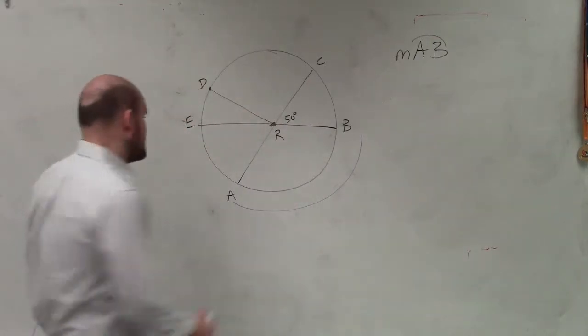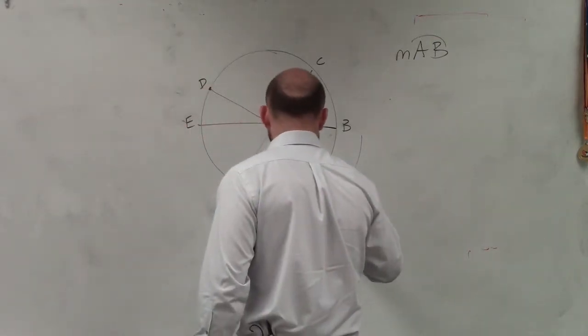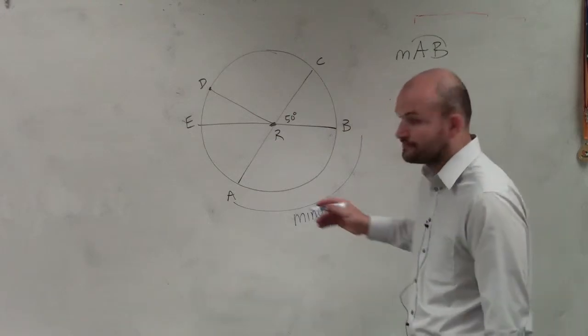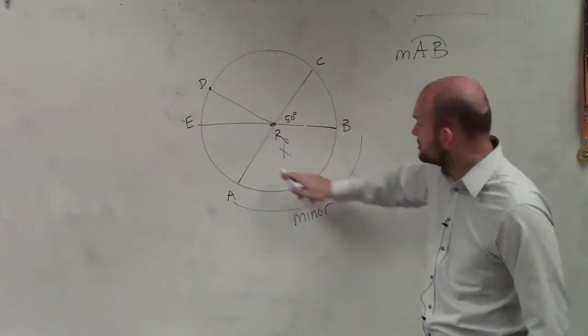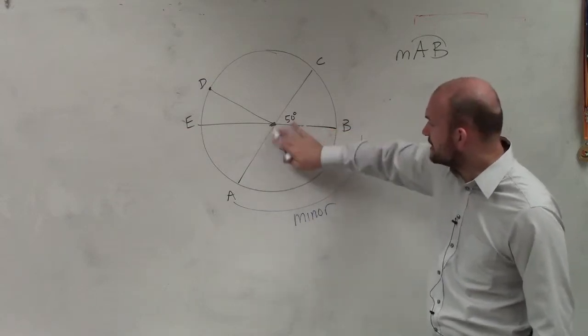We notice that this arc is less than 180 degrees, so we know that it is going to be our minor arc. Now, a minor arc, we don't know the measurement from here to here. We don't know this degrees. That's point R.